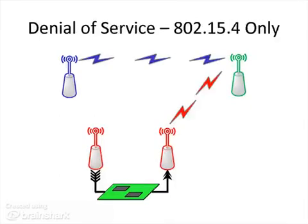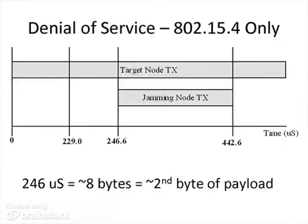A smarter attack is to wait for 802.15.4 traffic and then transmit your jamming, which avoids disrupting all other users of the same frequency. This is a timing diagram showing this jamming occurring. The target node starts transmitting at 0 microseconds. At 229 microseconds, the jamming node detects the transmission, and by 246 microseconds, the jamming node's transmission is on the air and will begin disrupting the target node. It only jams for a very short period — about 6 bytes of the 15.4 frame — before dropping off, eliminating interference to other users and making detection slightly more complicated.